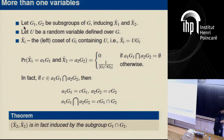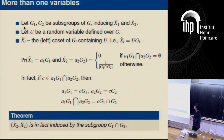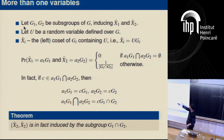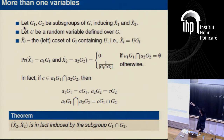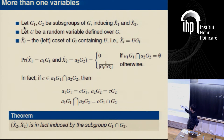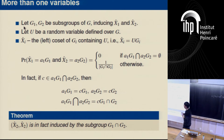This result is not very interesting for a single random variable, but we can extend the idea to multiple random variables or subgroups. Let's say we have two subgroups G1 and G2 of G. Each group induces a random variable: hat-X1 and hat-X2. Define U to be uniform over G; hat-Xi is the coset of Gi containing U.